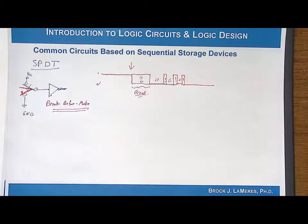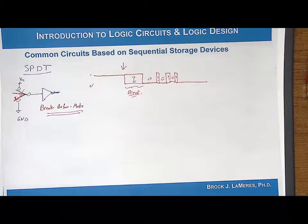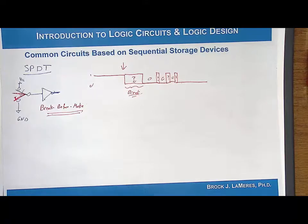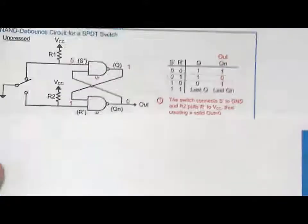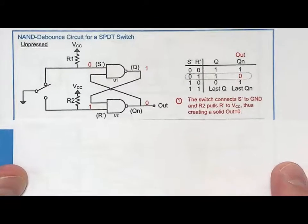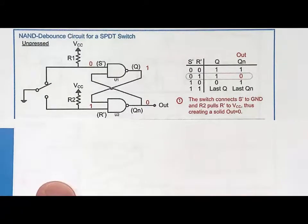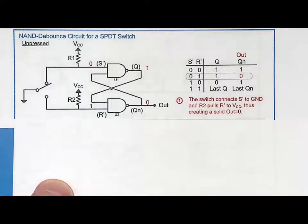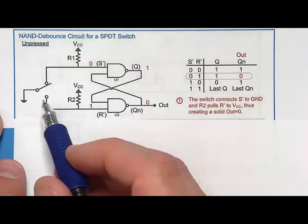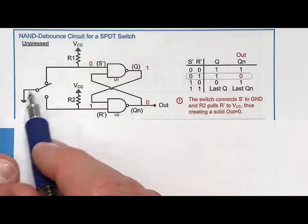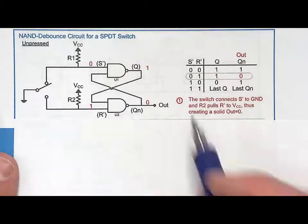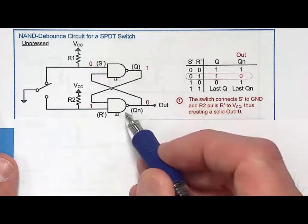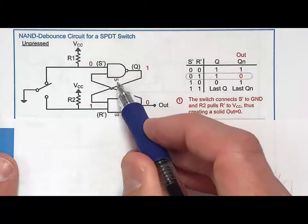What circuit will solve this? Let's look at a NAND bounce circuit - the most common switch debounce circuit in use today. This is a NAND bounce circuit for a single pole double throw switch. Let's look at how it operates in the unpressed situation. I'm going to connect the switching contact to ground and use an S-bar R-bar latch to hold the prior value when it goes into no man's land.